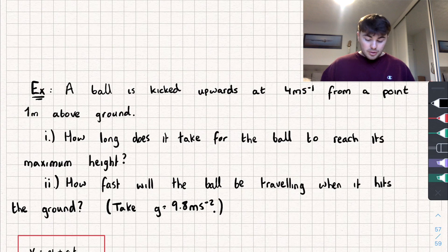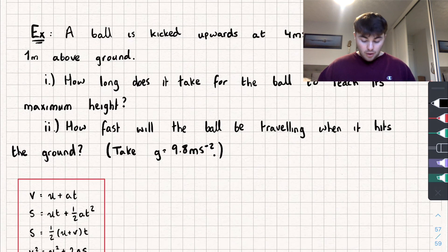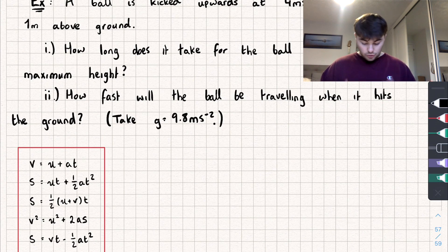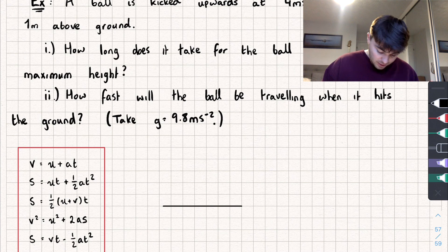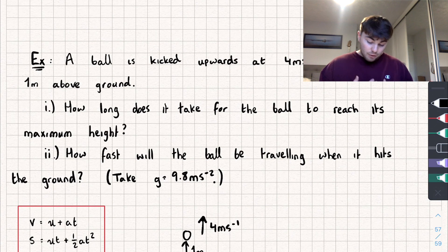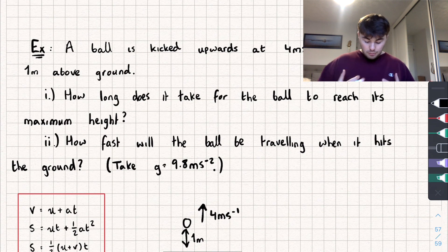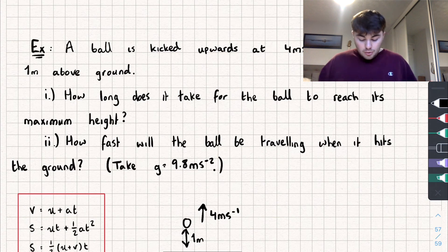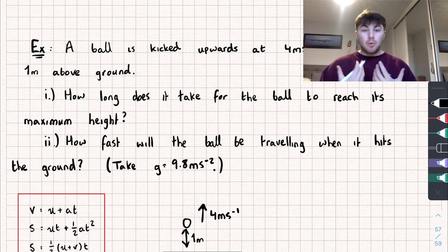The third question: a ball is kicked upwards at four meters per second from a point one meter above the ground. I always draw a picture for questions like this — the ball is one meter above the ground and kicked directly upwards at four meters per second. Part (a) asks how long it takes to reach its maximum height. This is a common question and slightly different to the previous one because the ball has been kicked upwards.